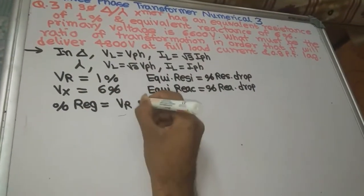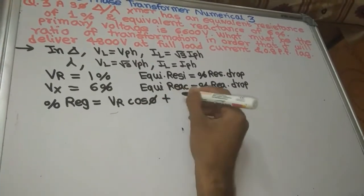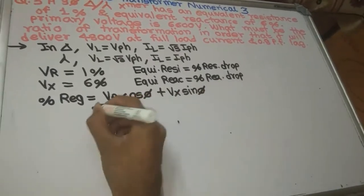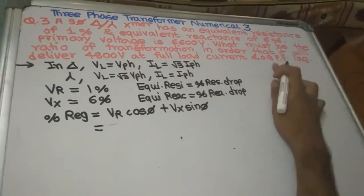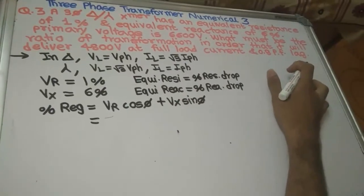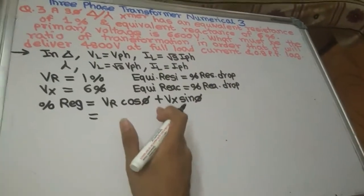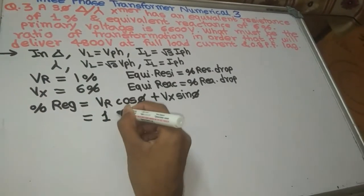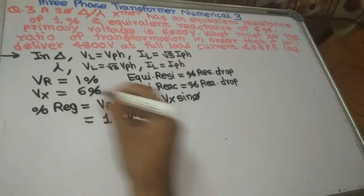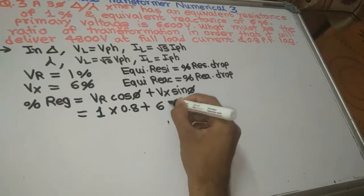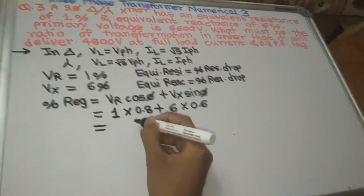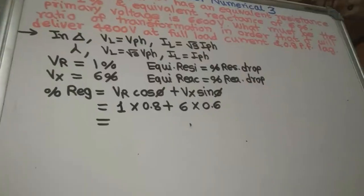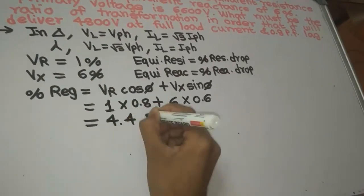The percentage regulation formula is: VR·cosφ + VX·sinφ. They said 0.8 power factor lagging, so we use the plus sign (for leading it would be minus). VR = 1, cosφ = 0.8, VX = 6, sinφ = 0.6. So percentage regulation = 1×0.8 + 6×0.6 = 4.4%.